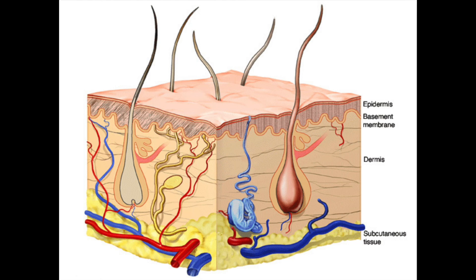The difference between pemphigus and pemphigoid really has to do with where the proteins are that those antibodies are attacking. So in order to better explain, we should probably talk a little bit about what normal skin looks like. Normal skin is made up of three main layers. The top layer is called the epidermis, the next layer is called the dermis, and below that is the subcutis or the subcuticular fat, the fat layer.